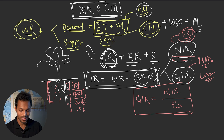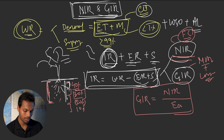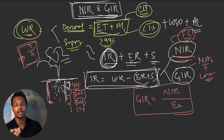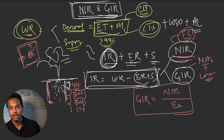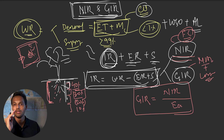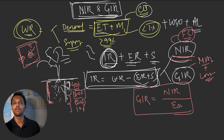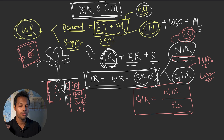Application efficiency is defined as the amount of water stored in the root zone divided by the total water that reaches the field, multiplied by 100. If x is the quantity of water coming to the field and y is the quantity stored in the root zone, then application efficiency = (y ÷ x) × 100. Adopting drip irrigation or sprinkler irrigation increases application efficiency.